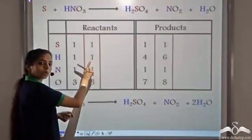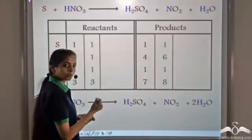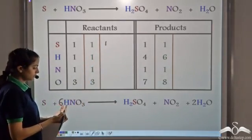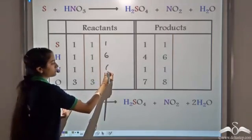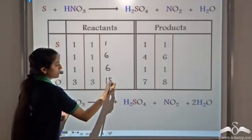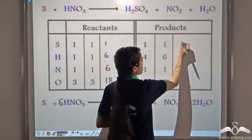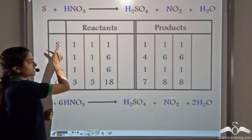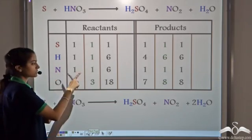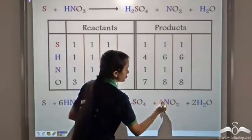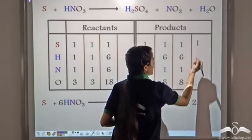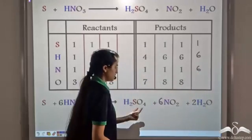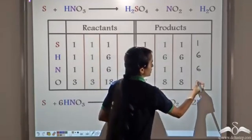When we take 2 molecules of water, we get 6 hydrogen atoms, 1 nitrogen, and 8 oxygen atoms on the product side. Now hydrogen is 1 on the reactant side and 6 on the product side, so we take 6 molecules of HNO3. This gives 1 sulfur, 6 hydrogen, 6 nitrogen, and 18 oxygen on the reactant side. No change on the product side. Hydrogen is now balanced, but nitrogen is not: 6 on the reactant side, 1 on the product side, so we take 6 molecules of NO2. This gives 1 sulfur, 6 hydrogen, 6 nitrogen, and 18 oxygen atoms on the product side.